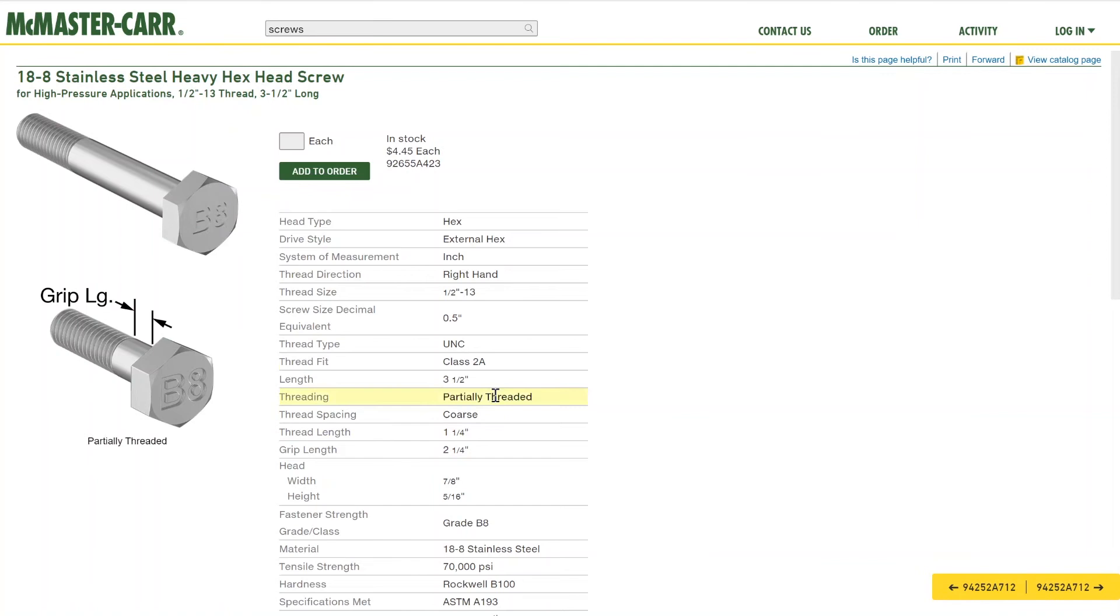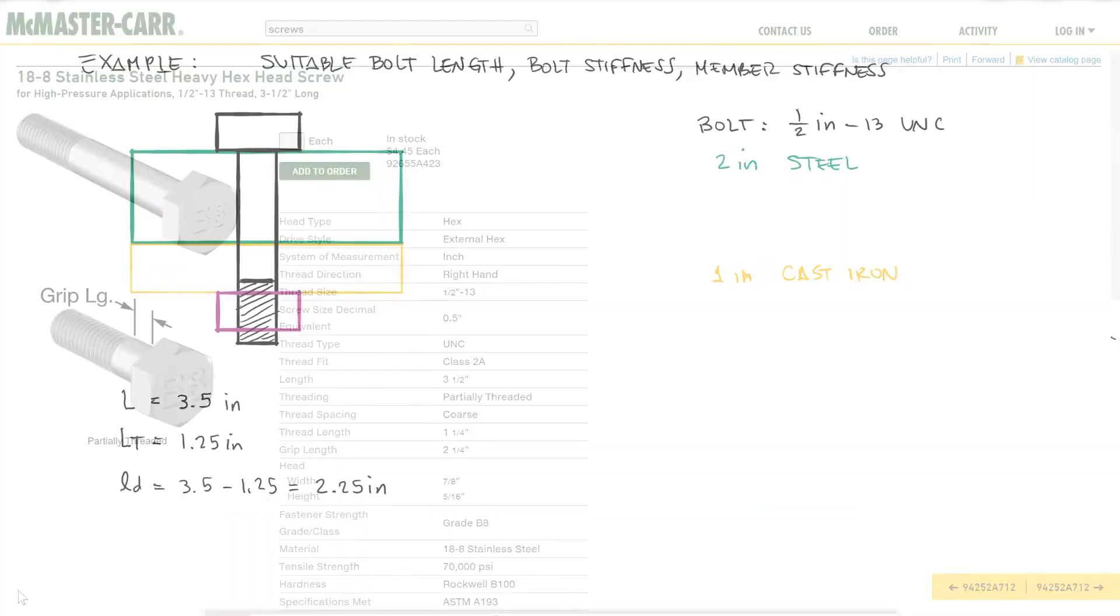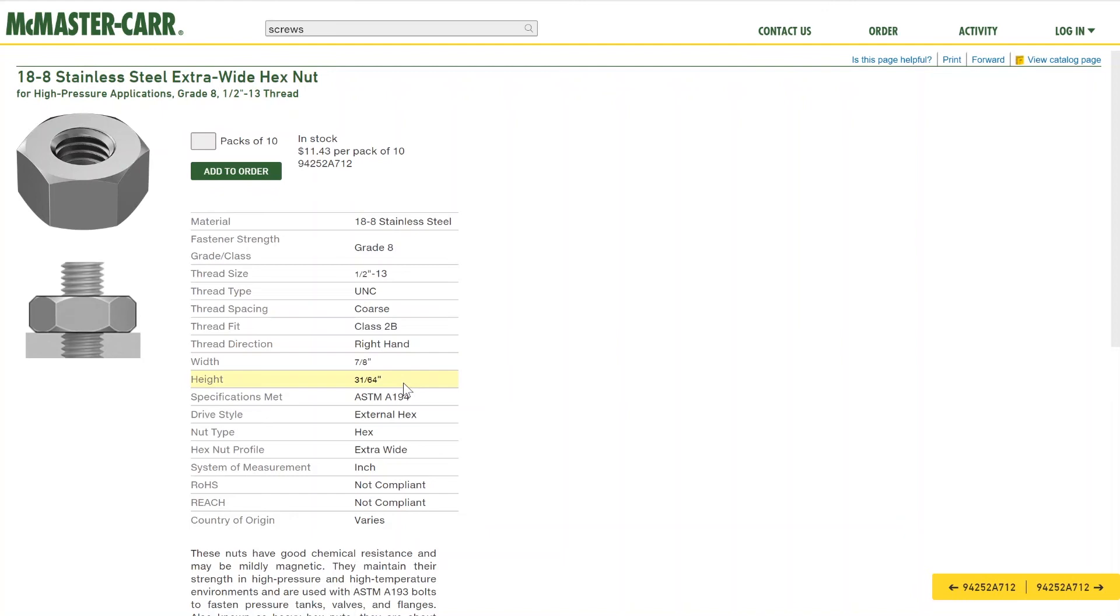From here I can see that the threaded length is 1.25 inches, which means that the non-threaded length is 2.25 inches. I can make sure that the nut will be fully engaged by looking up its height, which shouldn't be more than the extra 0.5 inches beyond the 3 inches of the members.